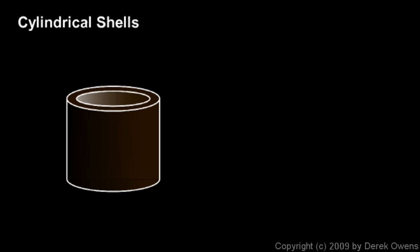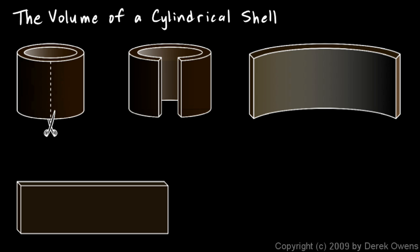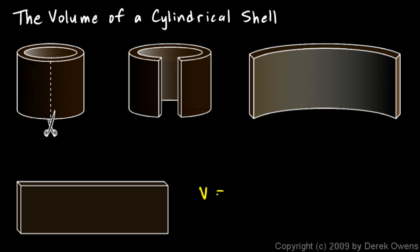We'll imagine the shell to be infinitely thin, so its volume is just about zero. To understand the volume, imagine taking the cylindrical shell and cutting it open with scissors along one edge, then unrolling it. When you spread it out and flatten it completely, it becomes a rectangular slab, and the volume of a rectangular slab is easy to calculate — it's just length times width times height.